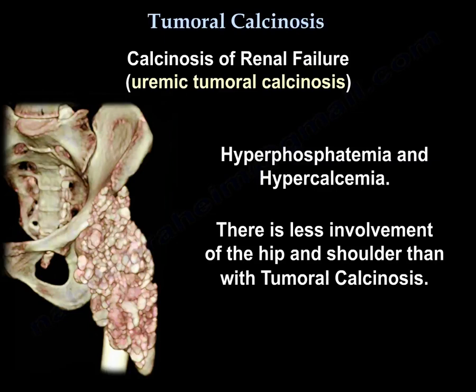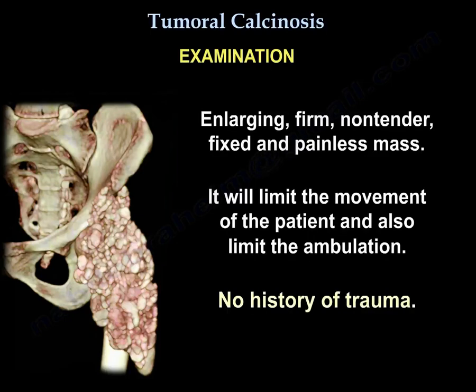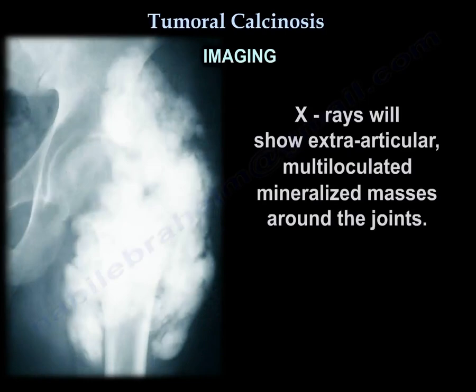Uremic tumoral calcinosis shows less involvement of the hip and shoulder than the classic form. On examination, you find an enlarging, firm, non-tender, fixed, painless mass that limits movement and may limit ambulation, with no history of trauma. X-rays show extra-articular multilobulated mineralized masses around the joints.